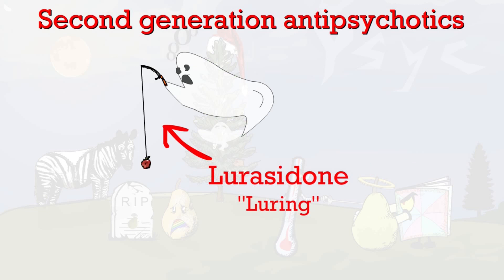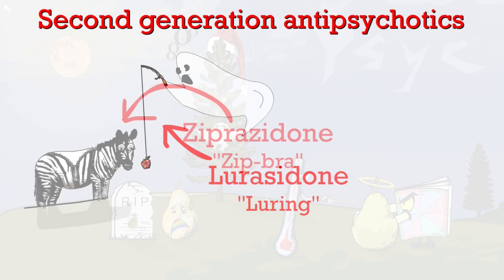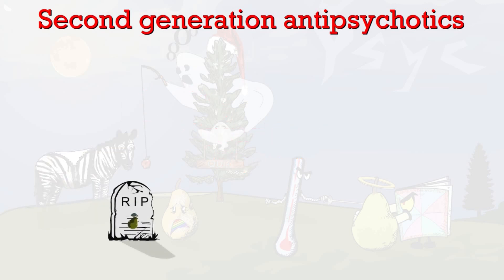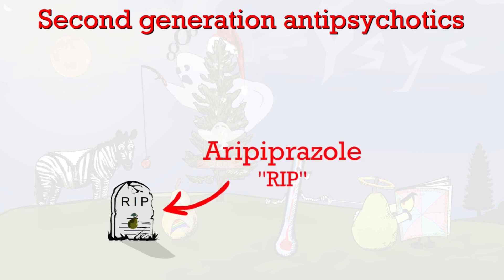The zipper on the zebra represents ziprasidone — 'zipper zebra, ziprasidone.' The tombstone with RIP on it stands for two different medications: aripiprazole — 'RIP, aripiprazole' — and risperidone — 'RIP, risperidone.'